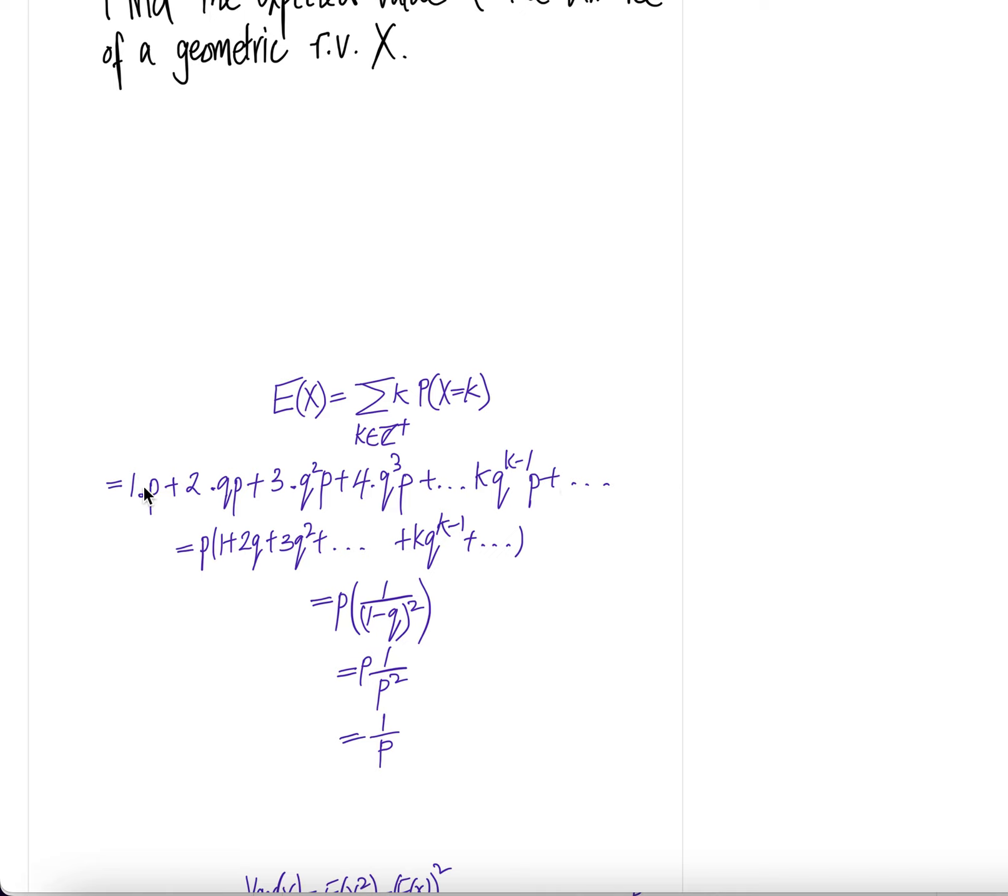When k equals 1, that means you get the first success in one trial. For k equals 2, first one is a failure, therefore it's q probability of q, and then followed by success. For the third one, you need three trials, that means fail, fail, and then success.